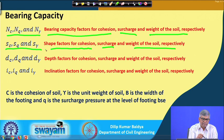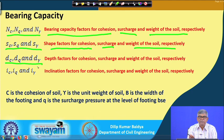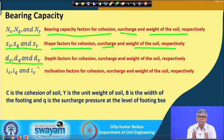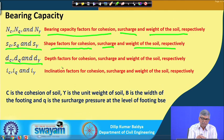Three depth factors dc, dq, dγ are also introduced. With increase in depth of foundation, the resistance due to cohesion, surcharge, and unit weight will differ. That difference is incorporated by a depth factor: dc is the depth factor for cohesion, dq is for surcharge, and dγ is for unit weight of soil. These three are introduced in three different parts of the bearing capacity equation.